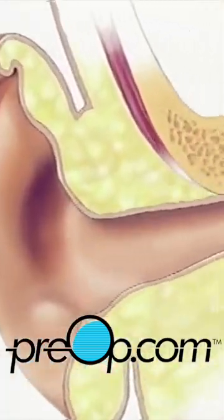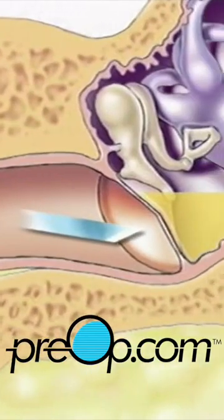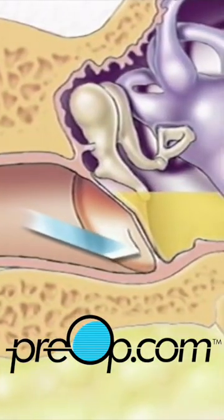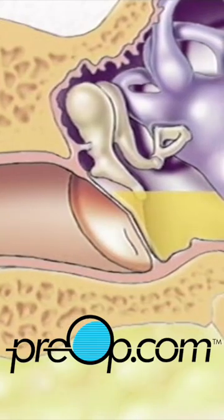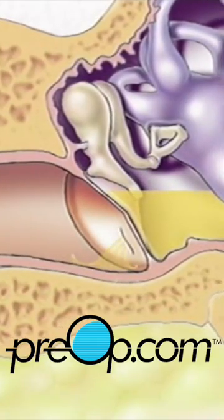When the operative field is numb, the surgeon will use the microscope to help make a very small incision in the lower part of the eardrum so that the fluid can drain harmlessly away.